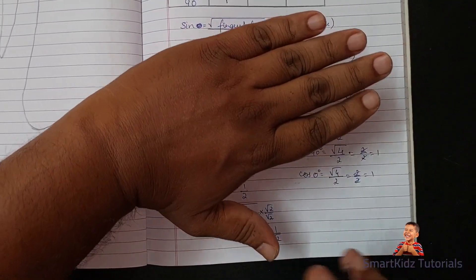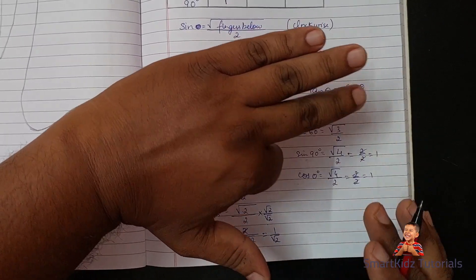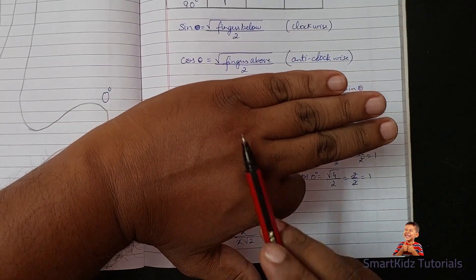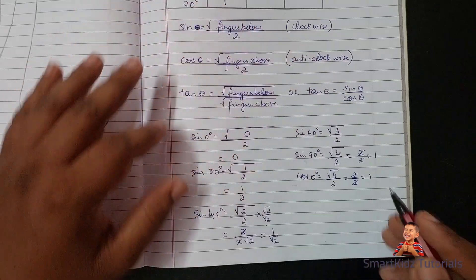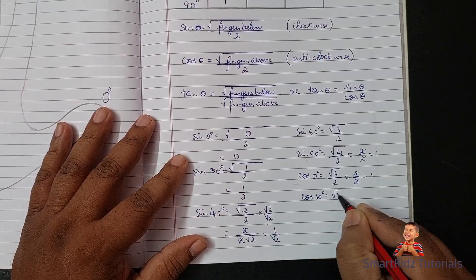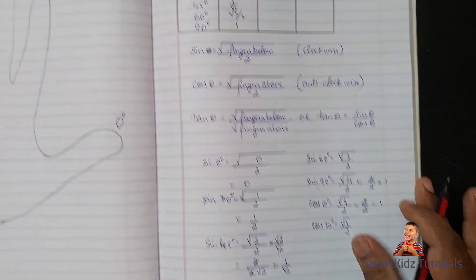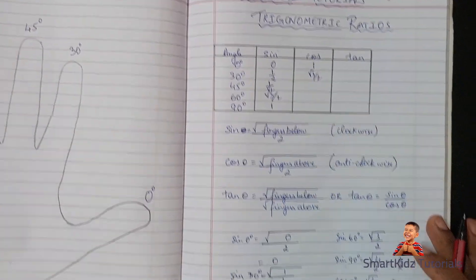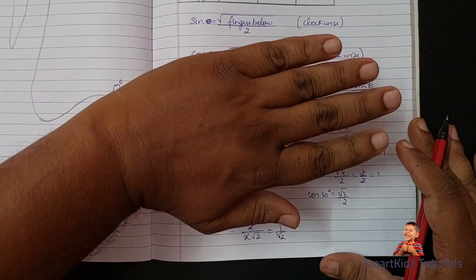For cos of 30 degrees, I close the index finger and look at the fingers above it: 1, 2, and 3 — three fingers. So cos of 30 degrees equals square root of 3 upon 2.